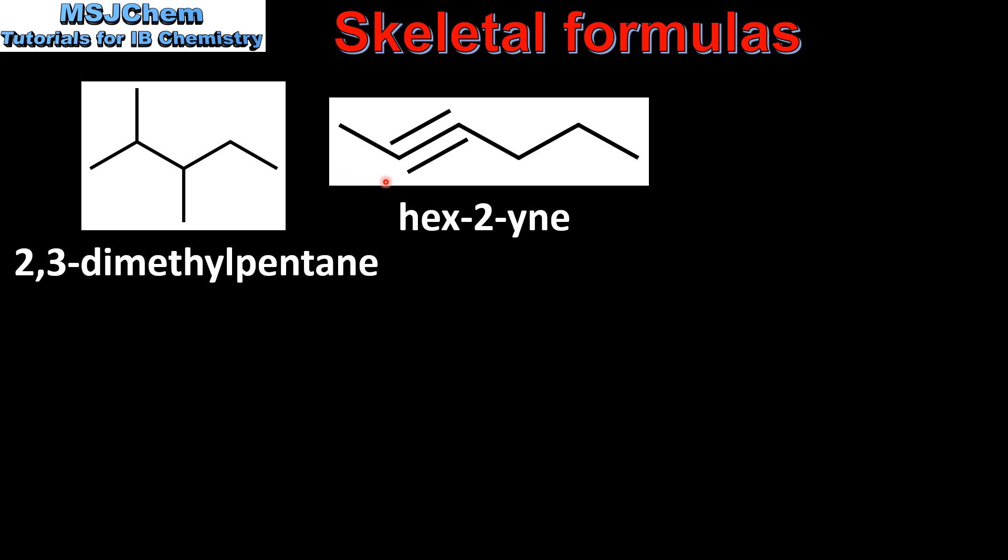Our next example is an alkyne due to the presence of a triple bond between carbon atoms. The longest continuous chain is six carbon atoms and the triple bond is between carbon number two and carbon number three. And the name is hex-2-yne.